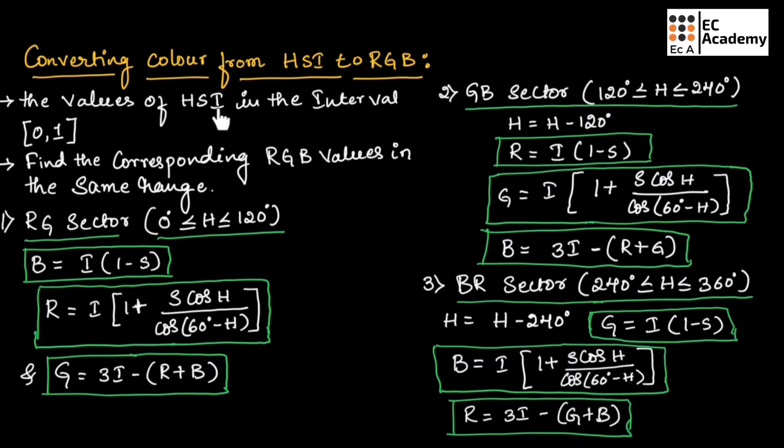If the values of HSI is given in the interval of 0 and 1, we need to find the corresponding RGB values in the same range. To find the values of RGB will depend upon the value of H which is hue.